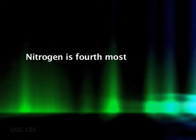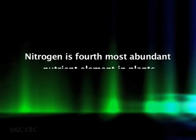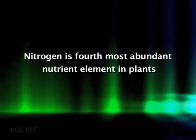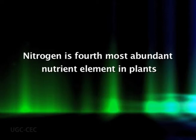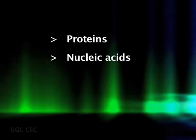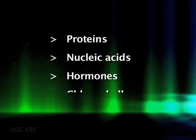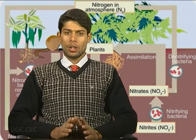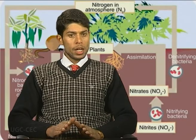On a dry weight basis, nitrogen is the fourth most abundant nutrient in plants. It is an essential constituent of proteins, nucleic acids, hormones, chlorophyll, and a variety of other important primary and secondary constituents.